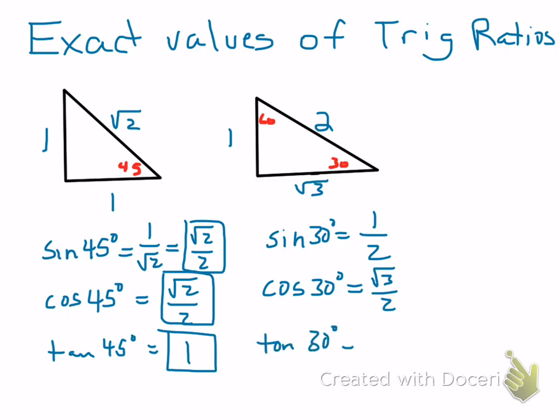The tangent of 30 degrees is equal to 1 over the square root of 3, which if you rationalize it is the square root of 3 over 3.